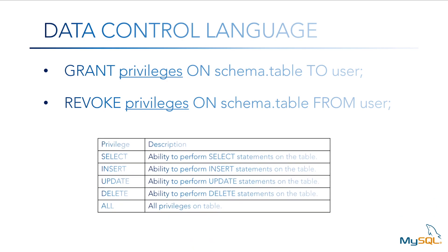The table below shows a list of some of the privileges you can grant and revoke. Select means the user can select records from the data. Insert means the user can insert records into the table. Update allows the user to make updates. Delete allows the user to delete the table or records from the table. All means the user can have access to all of the privileges, including all of the ones mentioned previously.